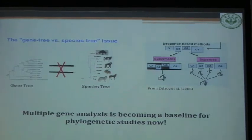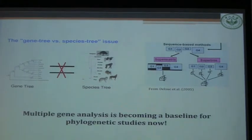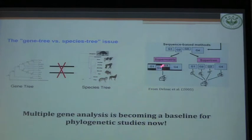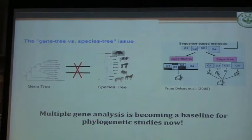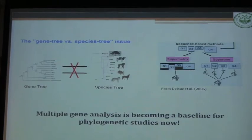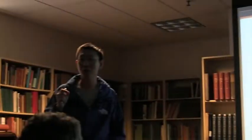We all know that the gene tree and the species tree are not equal. The gene tree just reflects part of the species tree. So if you want to make a correct species tree, many people will sequence many genes and combine them together, or analyze them using species tree methods or supertree methods to build a final species tree. Multiple gene analysis is now becoming the baseline for phylogenetic study, and everybody wants to use more nuclear genes.